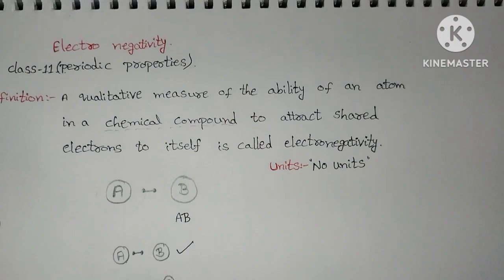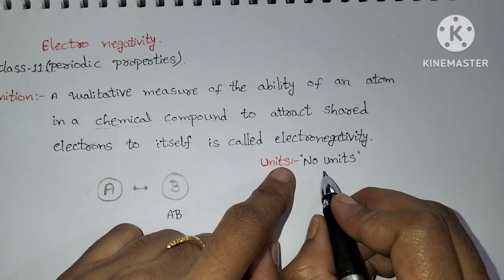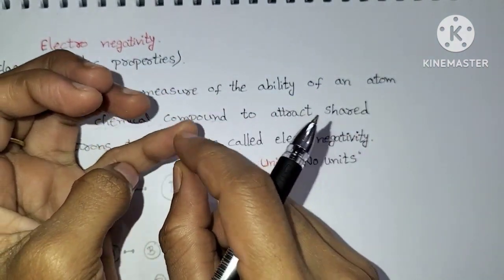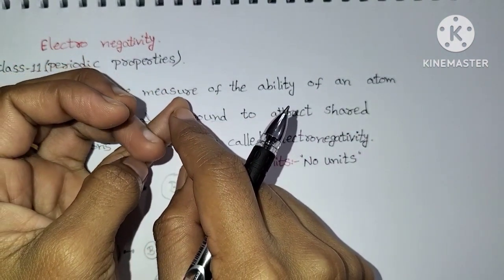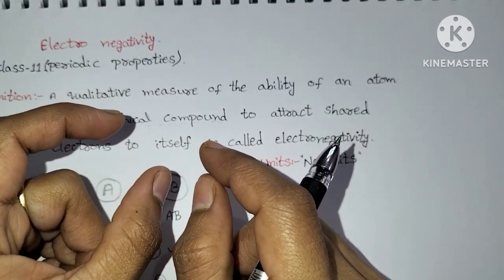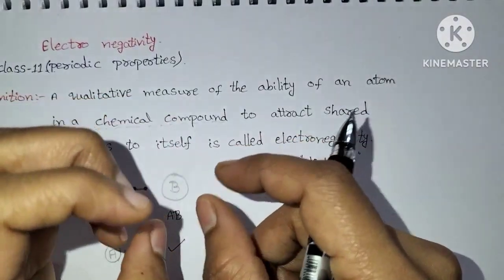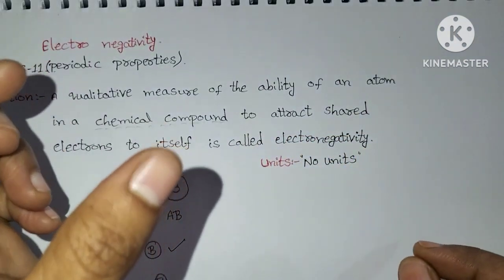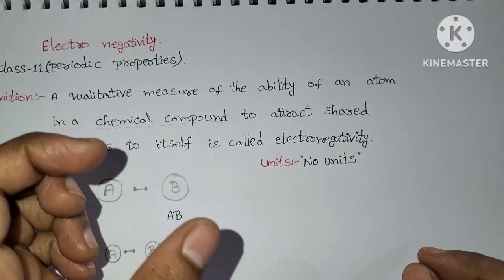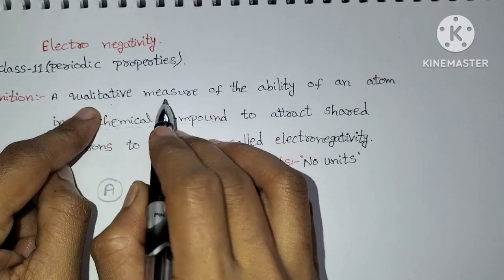Electronegativity has no units. In the previous video, we saw that ionization energy has units because its measurement is quantitative — it measures how much energy is required to remove an electron, so it is related to enthalpy or energy and has units. But electronegativity is a qualitative measure, so it has no units.